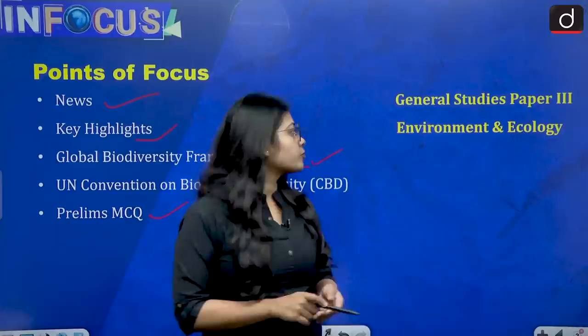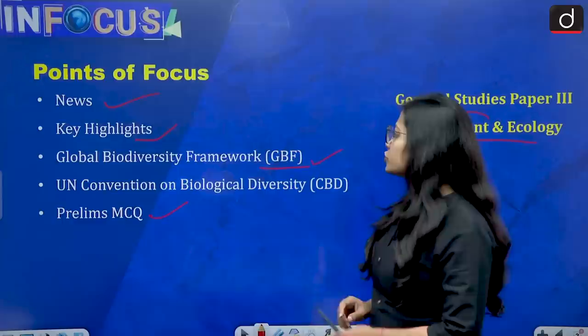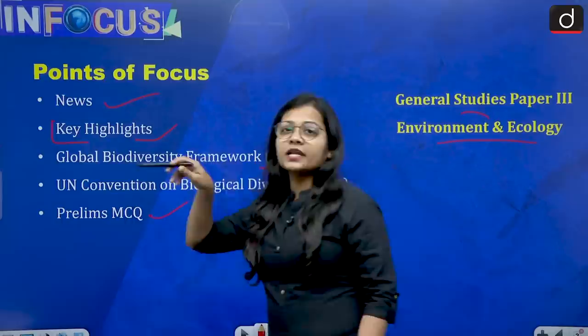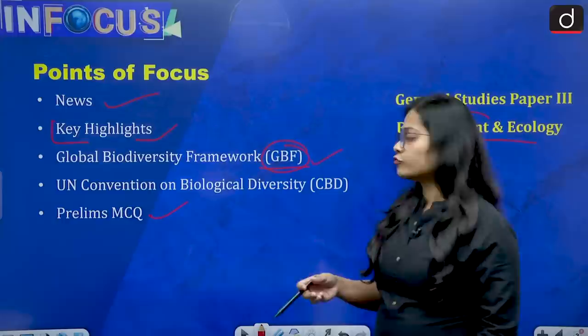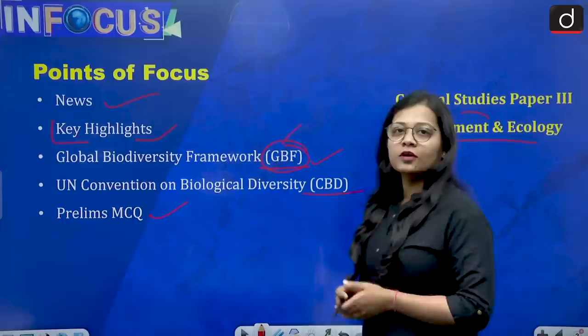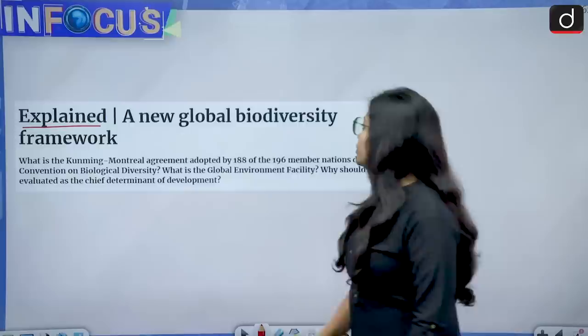This topic is relevant from General Studies Paper 3 — Environment and Ecology — and can be important for both Prelims and Mains. From Prelims, you should know key highlights, protocols, or conventions that emerged from it. You should also know the origin of the Global Biodiversity Framework and its parent convention, the CBD. Let's get started and see the news, taken from The Hindu Explained.